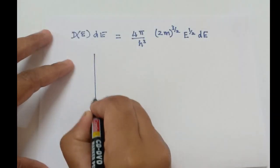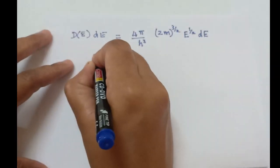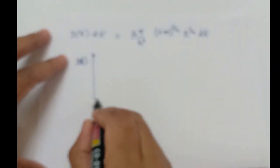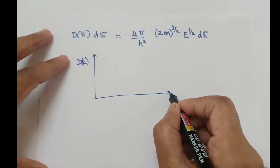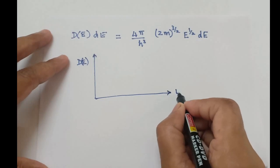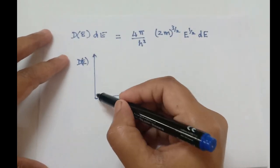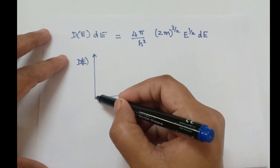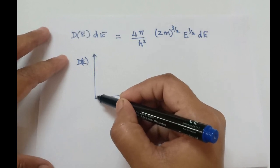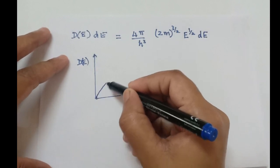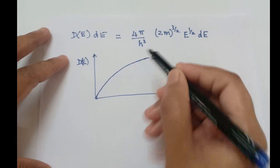When you plot the density of states D(E) versus energy E, it follows an E^(1/2) dependence — a parabolic curve.